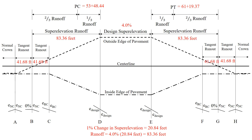The superelevation runoff distance is 4% times 20.84 feet, giving a runoff of 83.36 feet. We can also find our tangent runout, which is our normal crown of 2% divided by our design superelevation of 4%, multiplied by the runoff. So it's 2% divided by 4% multiplied by 83.36 feet — essentially half of that runoff — giving us 41.68 feet for our tangent runout.